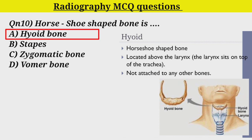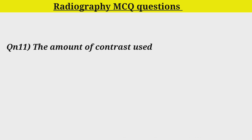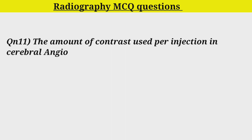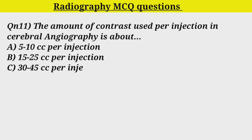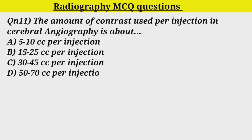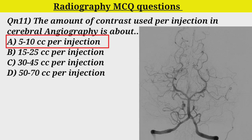Q11. The amount of contrast used for injections in cerebral angiography is about Option A. 5 to 10 cc for injections.